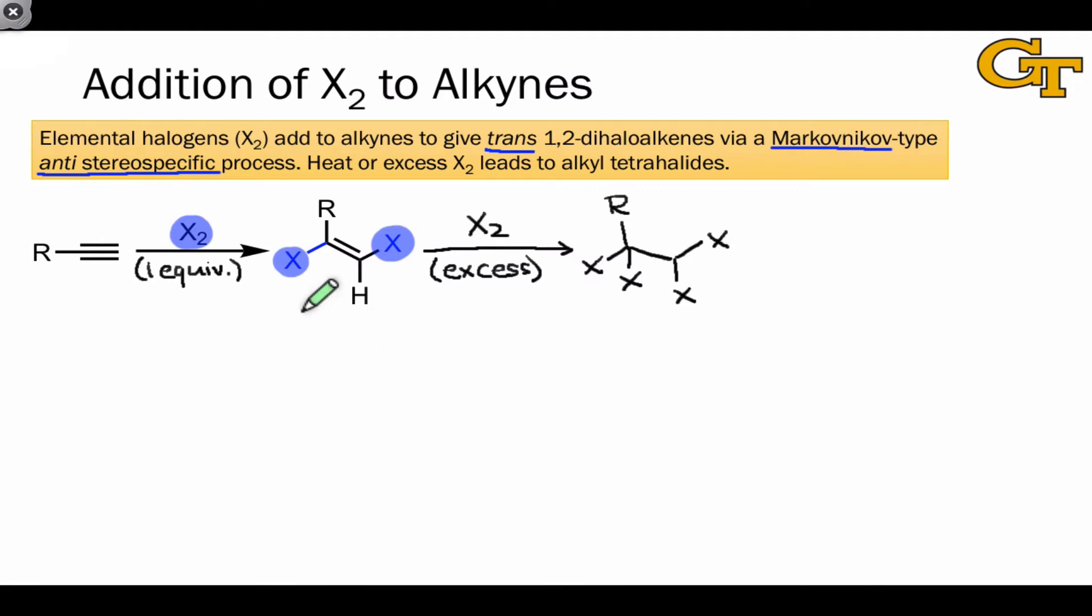We can even do fun things here like use one equivalent of one halide, let's say Br2, and make the second equivalent a different halogen completely, say Cl2. We end up with a situation where two chlorines have added at the two carbons of the alkyne in the second addition, and two bromines have added across the alkyne in the first addition.